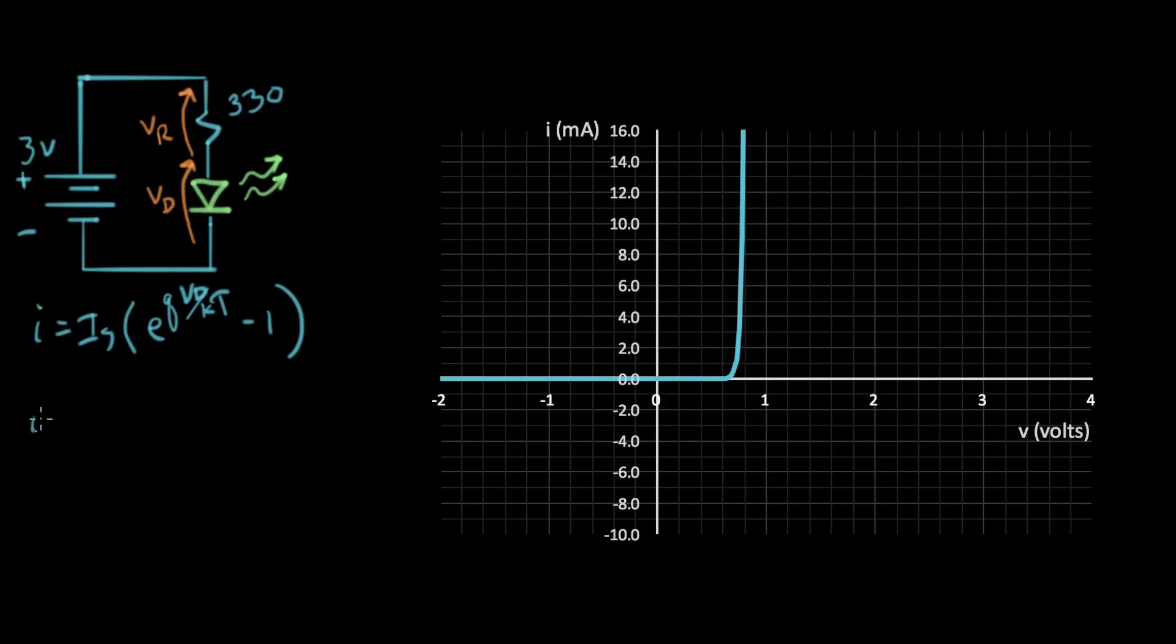And the corresponding equation for the resistor is I equals V resistor over 330 ohms. That's just Ohm's law for the resistor. And I in both cases is this I right here. Now if I wanted to I could set these two expressions equal to each other and solve somehow for VD and VR.